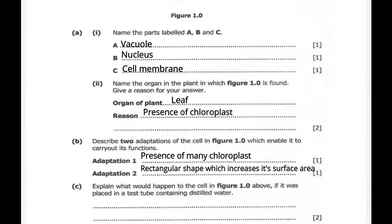Question 1c. Explain what would happen to the cell in figure 1.0 above if it was placed in a test tube containing distilled water. So what would have happened? The cell would gain water by the process called osmosis and become swollen.